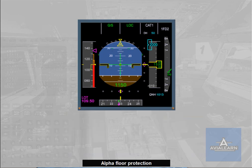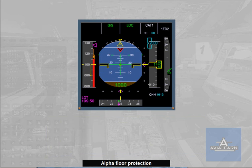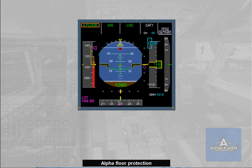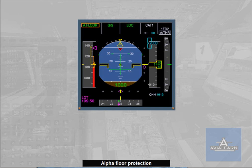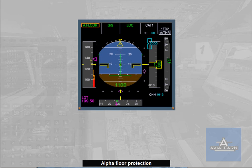If the aircraft speed continues to drop below the low energy warning and the angle of attack increases above a given threshold, the alpha floor function of the autothrust is triggered. The autothrust commands full thrust, i.e. TOGA thrust. The angle of attack threshold which triggers the alpha floor protection is processed by the FAC as a function of aircraft parameters such as configuration and weight.